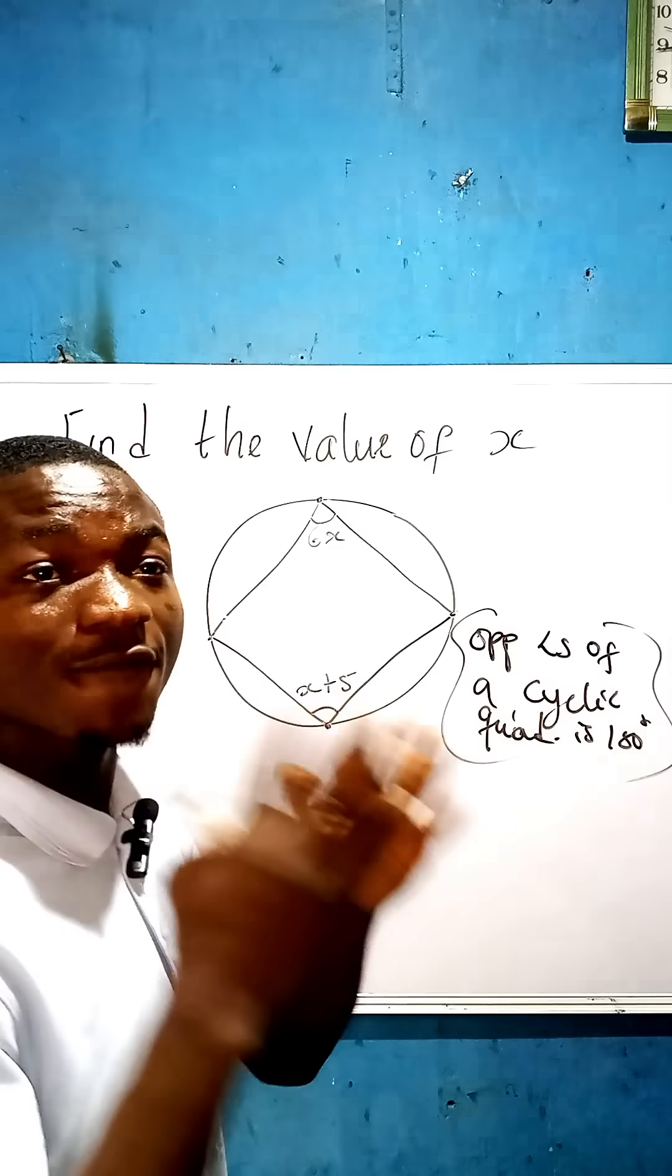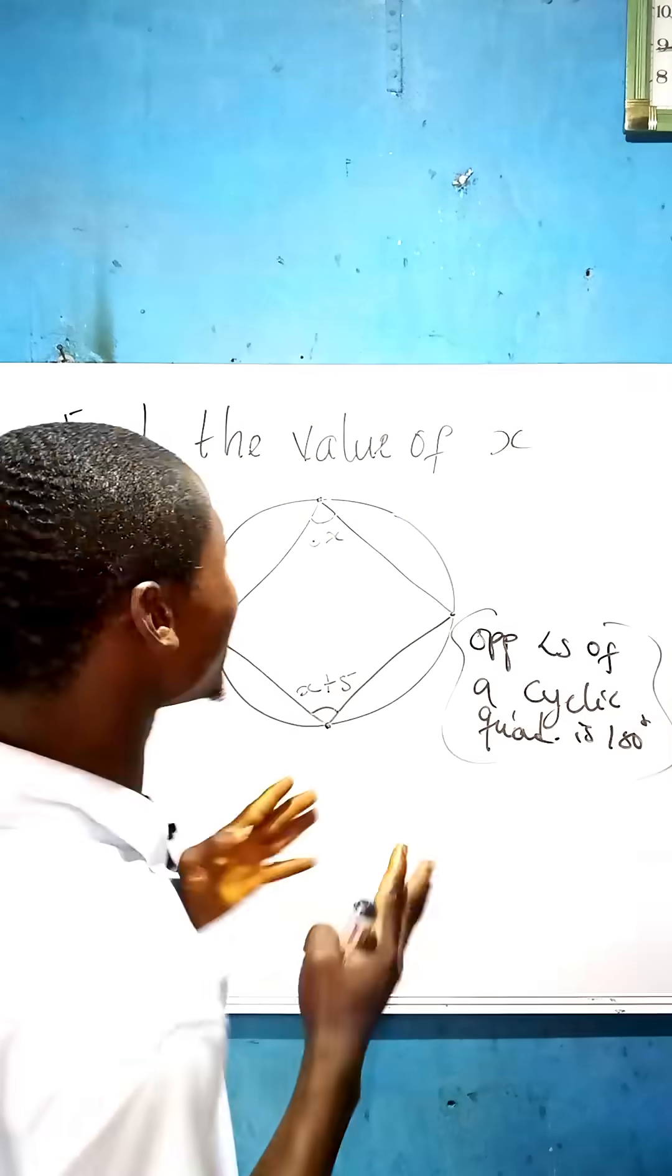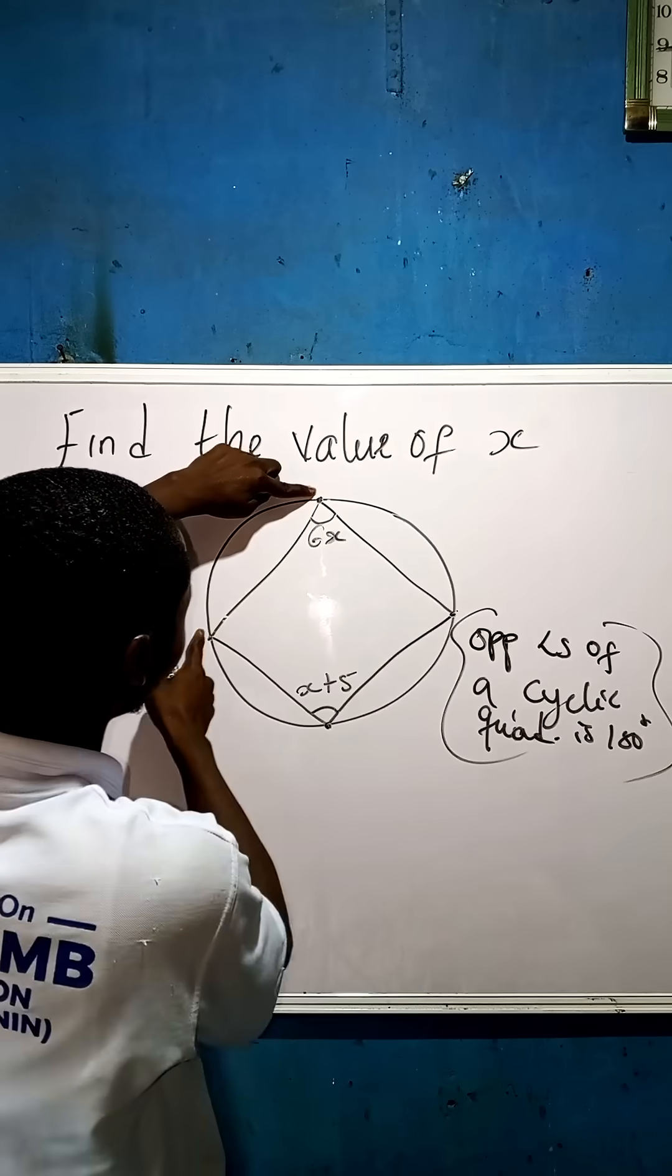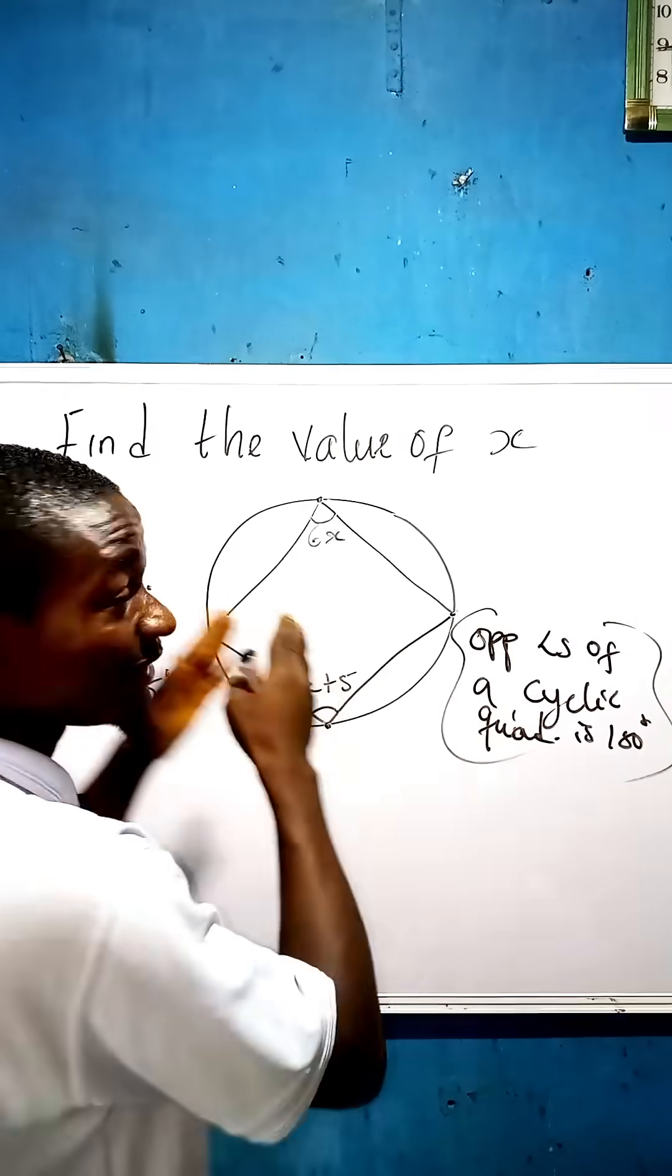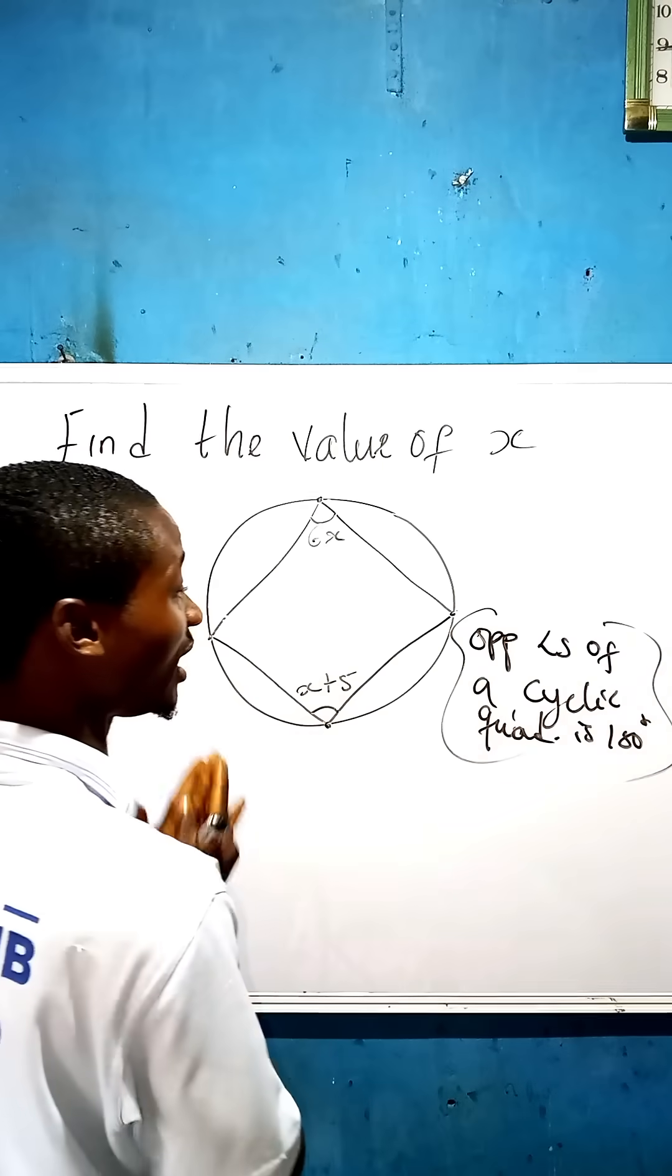And what's a quadrilateral? A quadrilateral means four-sided shape. Look at every side: one, two, three, four. It's touching the body of the circle. Four-sided, touching it. That's what it's called cyclic quadrilateral.